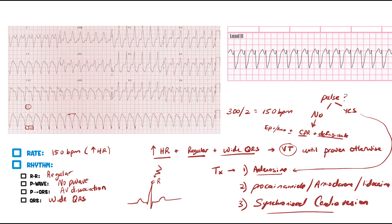Looking at another EKG example: about two boxes between deflections — that's 150 beats per minute, wide QRS complex, and regular intervals. Tachycardic, regular, wide complex tachycardia — VTac until proven otherwise. Also notice that all the QRS complexes look exactly the same. When they all look the same, that's called monomorphic VTac.